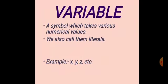Variables don't have a fixed value — it depends on the equation. We can write them as small letter alphabets from A to Z. A symbol which takes various numerical values is called a variable because they don't have a fixed value. We also call them literals. Another name of a variable is a literal. For example, X, Y, Z.